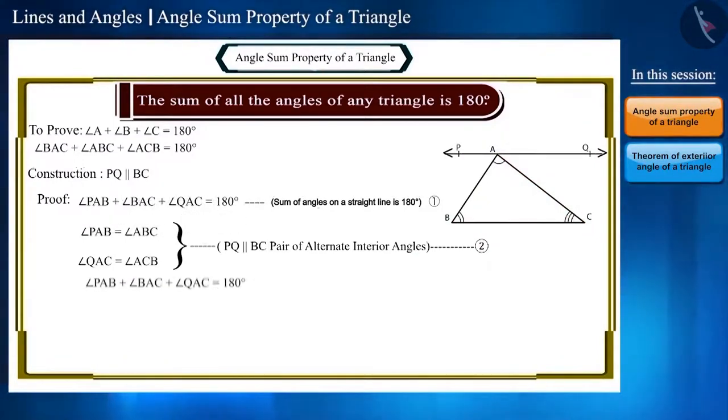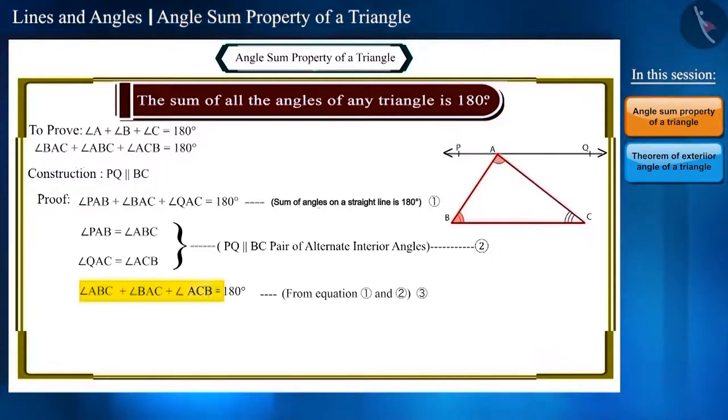Equation 2. Now in equation 1, we can write angle ABC instead of angle PAB and angle ACB instead of angle QAC. So, equation 1 will be angle ABC plus angle BAC plus angle ACB equals 180 degrees. So friends, thus the theorem is proved.